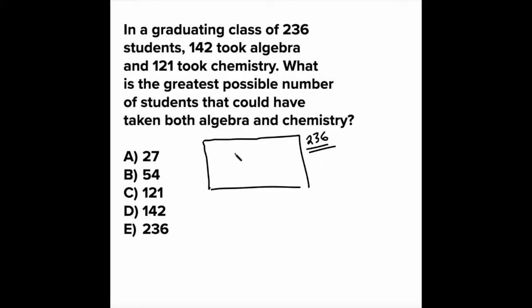And in this universe, we have some people who take algebra and some people who take chemistry and then potentially some people who take both. Now the both is represented by this overlap here, right? Where the two circles overlap each other.